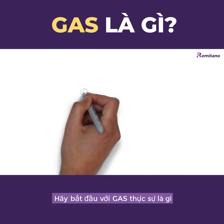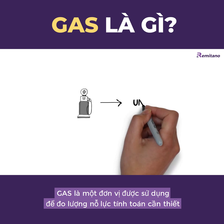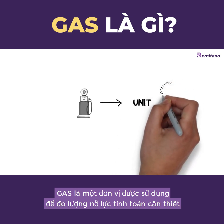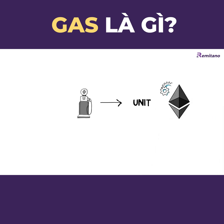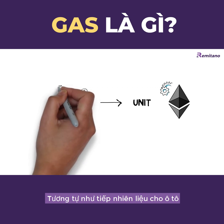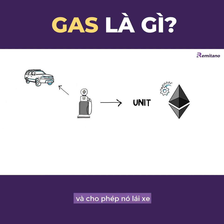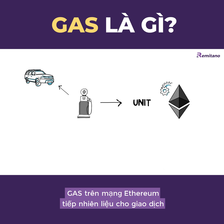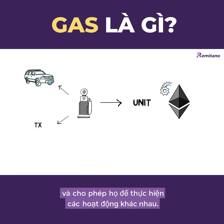Let's start with what gas actually is. Gas is a unit used for measuring the amount of computational effort required to perform specific actions on the Ethereum blockchain. The name itself hasn't been chosen by accident. Similarly to gasoline fueling a car and allowing it to drive, gas on the Ethereum network fuels transactions and allows them to perform different operations.